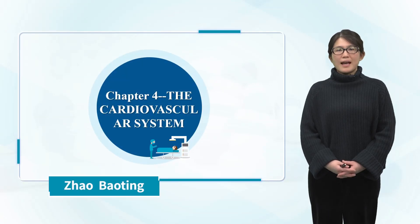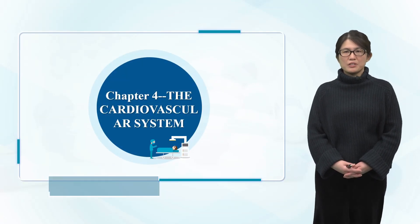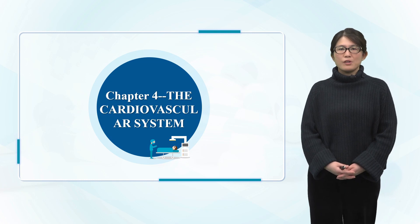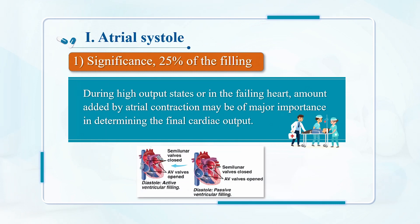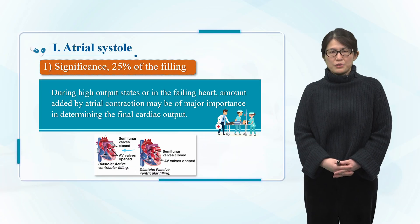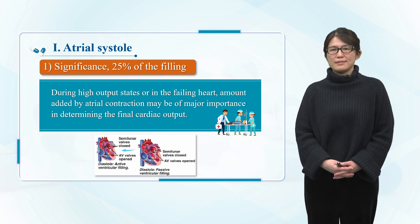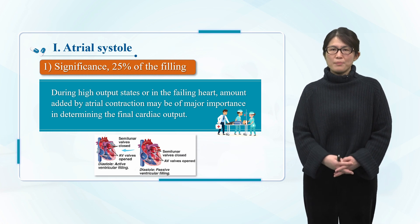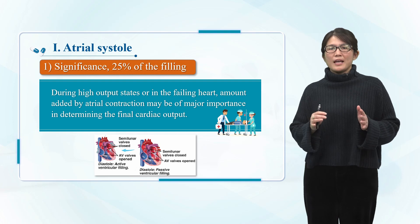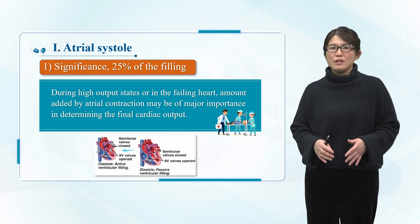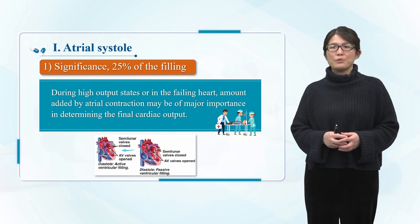Hello everyone. Next I will share the characteristics of cardiac cycle and heart sound with you. Before the anterior constriction, the heart is in full diastole. At this time, the semilunar valve closes, the atrial ventricular valve opens, and the blood flows from the veins through the atria into the ventricles, so that the heart continues to fill.